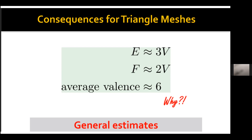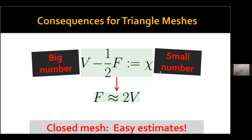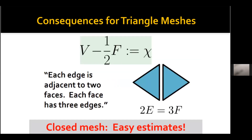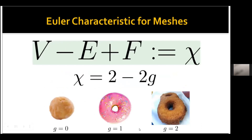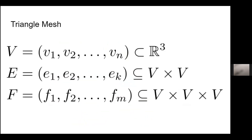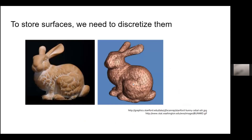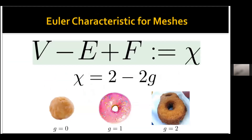Do we have any questions about this proof? Q: Why does chi equal zero? A: Chi is not strictly zero — it's just that compared to V and F, chi is usually a very small number, like smaller than 10. But for a mesh like the bunny example, the number of vertices and edges is much larger, so we can approximate chi as zero.